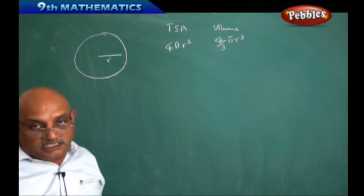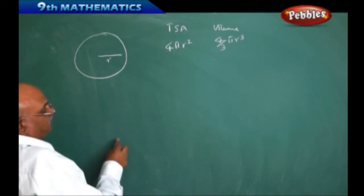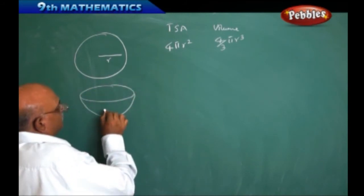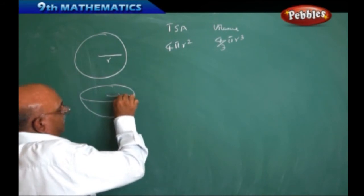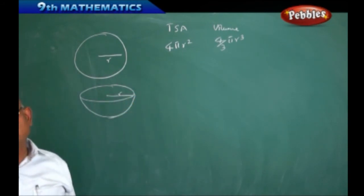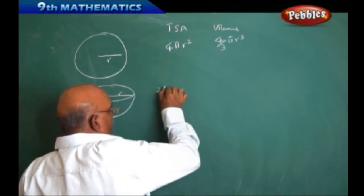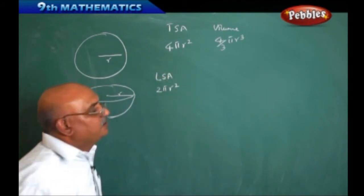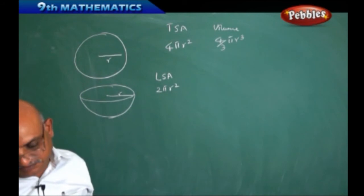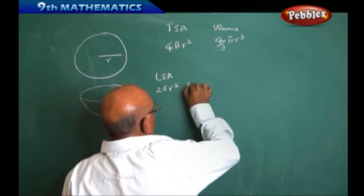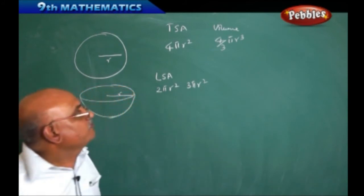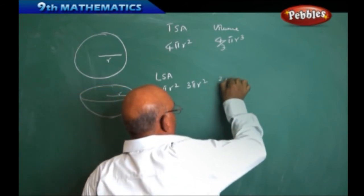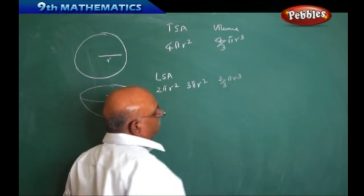Now if I take a hemisphere — hemisphere is half of the sphere, and it looks like this. This is the radius R. The lateral surface area is equal to 2πR². The total surface area is equal to 3πR². The volume is equal to (2/3)πR³.